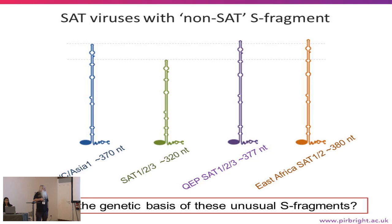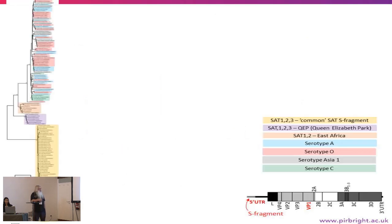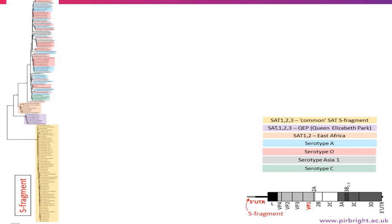We want to look at what the genetic basis is of the unusual S fragments. Looking at phylogenetic trees of the S fragment, we have what we call the southern African or common SAT fragments all grouped here, with SAT 1, 2, and 3 mixed together. O/A/C Asia 1 forms a cluster here, and then two other clusters — the purple one being Queen Elizabeth National Park, and the orange one being East Africa, where there's only SAT 1 and SAT 2, though in Queen Elizabeth Park there's also SAT 3.